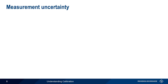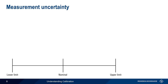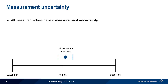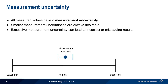Let's look graphically at measurement uncertainty and why it's important. In this example, we'll call this the acceptable range of values for a given parameter. When a parameter is measured, it's important to keep in mind that, like all other measured values, this value has an uncertainty associated with it — the true value of this measured parameter is not a point, but lies somewhere within a range. Smaller measurement uncertainties are always desirable, since excessive measurement uncertainty can lead to incorrect or misleading results. Here, our measured value and its uncertainty lie well within the acceptable parameter range.